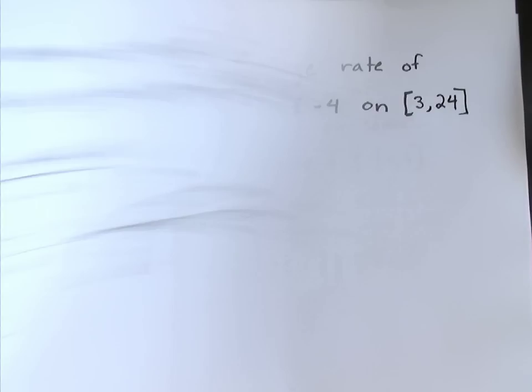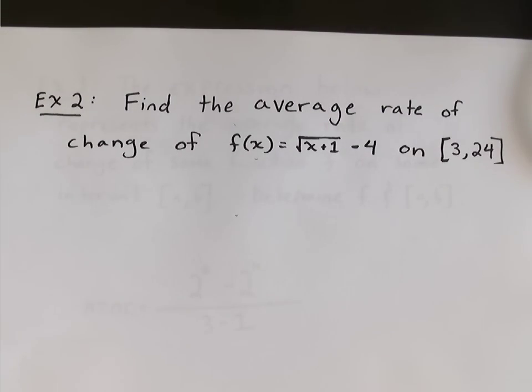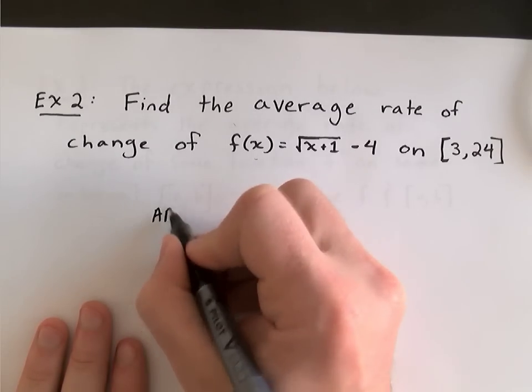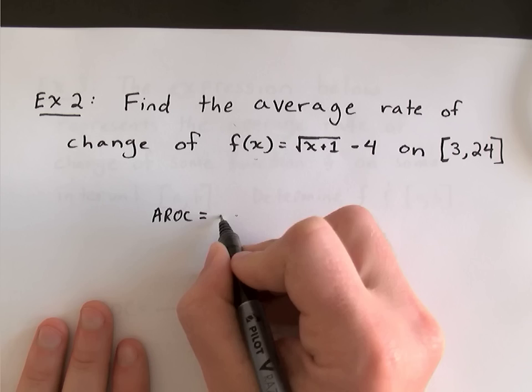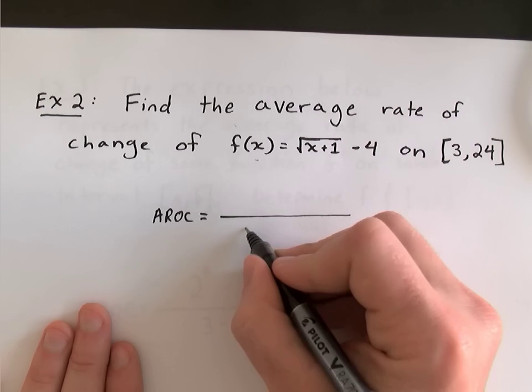Let's look at example 2. We're asked to find the average rate of change of another function on another interval. This time, we have f(x) equals the square root of x plus 1 minus 4 on the interval from 3 to 24. So, the average rate of change is nothing but the slope.